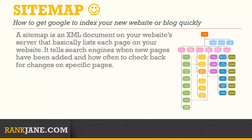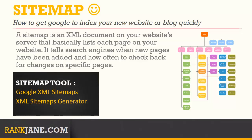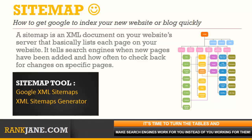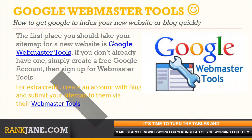Create a sitemap. A sitemap is an XML document on your website's server that basically lists each page on your website. It tells search engines when new pages have been added and how often to check back for changes on specific pages. For example, you might want a search engine to come back and check your homepage daily for new products, new items, and other new content. If your website is built on WordPress, you can install the Google XML Sitemaps plugin and have it automatically create and update your sitemap for you, as well as submit it to search engines. You can also use tools such as the XML Sitemaps generator.